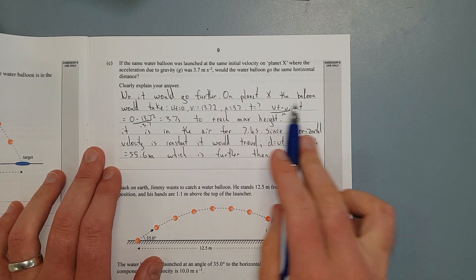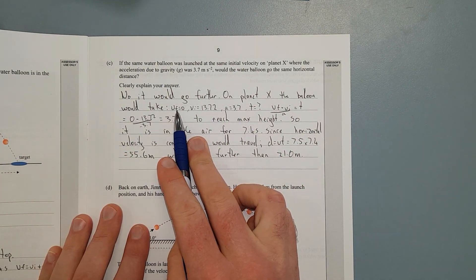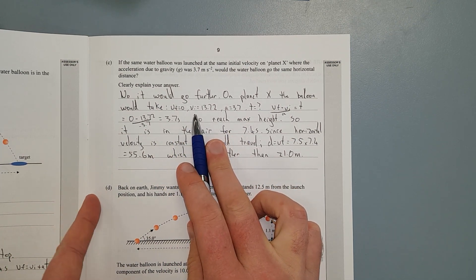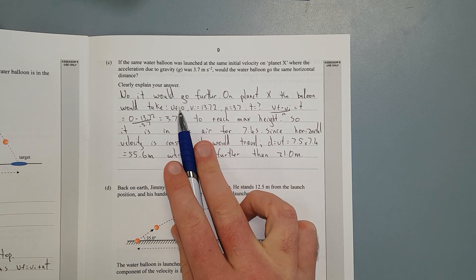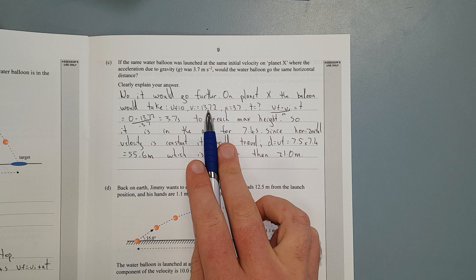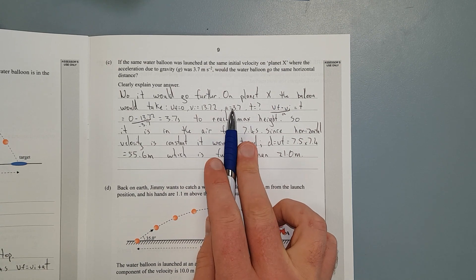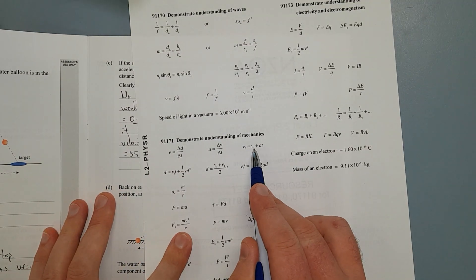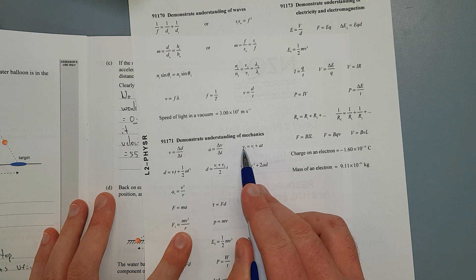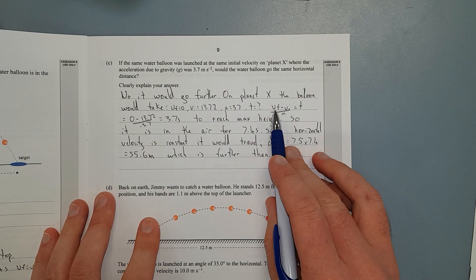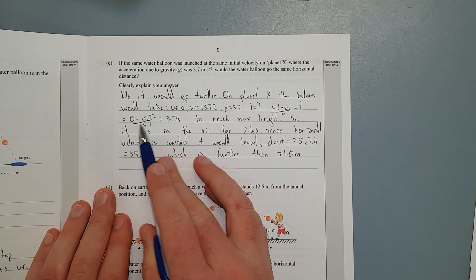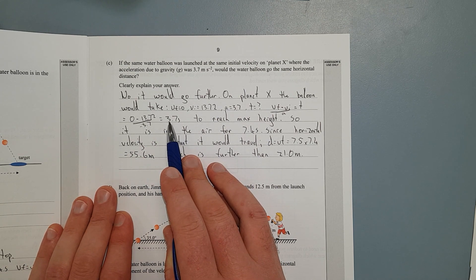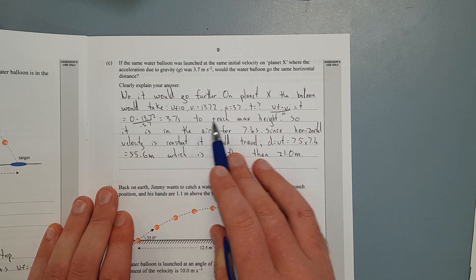So what I've said is, no, it would go further. On planet X, the balloon would take, and I've written the final velocity at the top of the flight. So I'm going to work out how long it's going to be in the air for. That's the point of what I'm going to try and do first. And then I'll times that by the horizontal velocity, and that'll give me the range. So how long it's in the air for, the initial vertical component is still going to be 13.7, which we just worked out. The new acceleration is going to be 3.7. So using that same formula, VF equals VI plus AT, you subtract both sides by VI, and then divide by A, and that'll give you time. VF minus VI divided by A equals time.